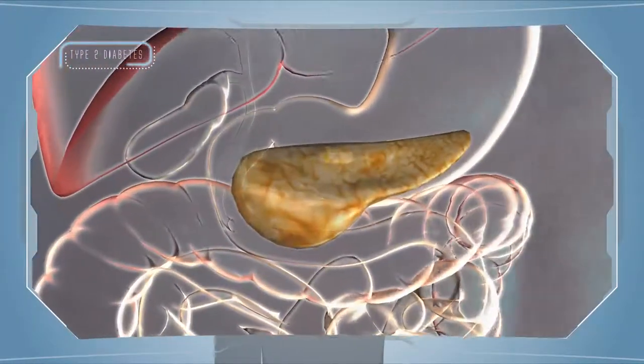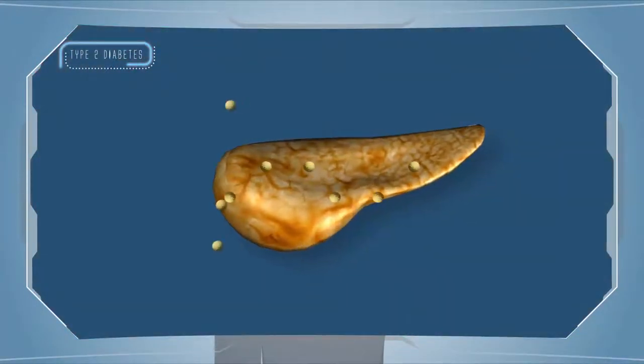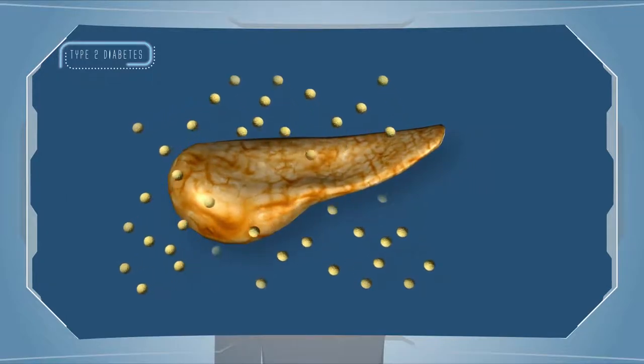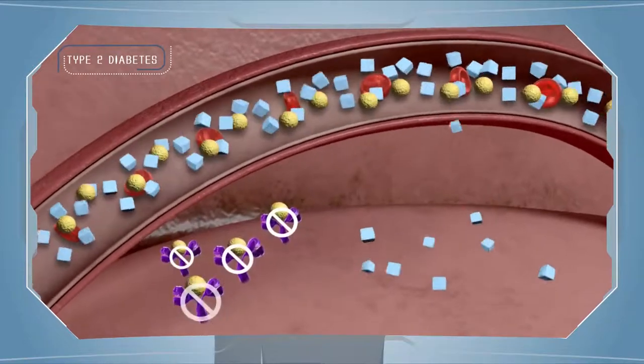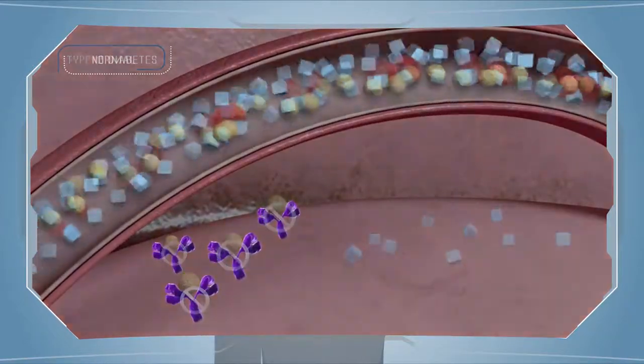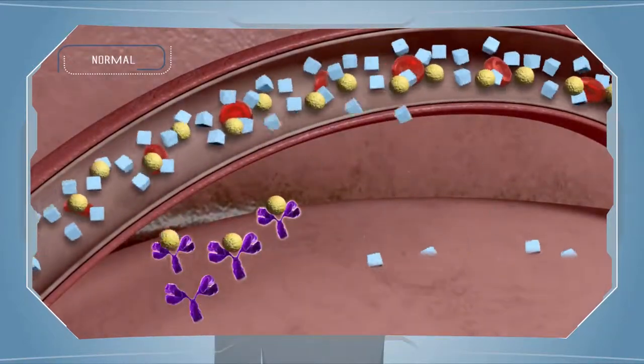In type 2 diabetes, the cells in the body do not react to insulin. This is also known as insulin resistance, or the insulin produced by the pancreas does not match the requirement of the body.